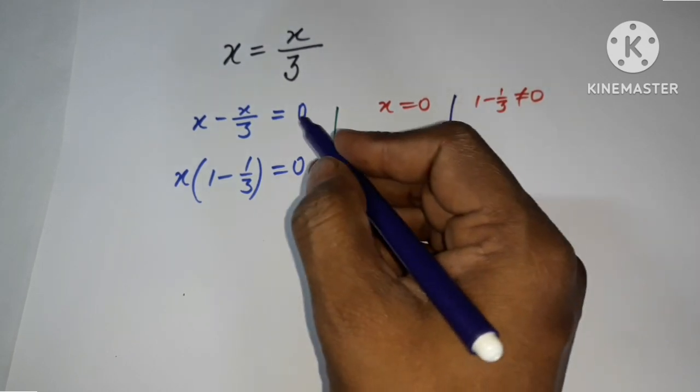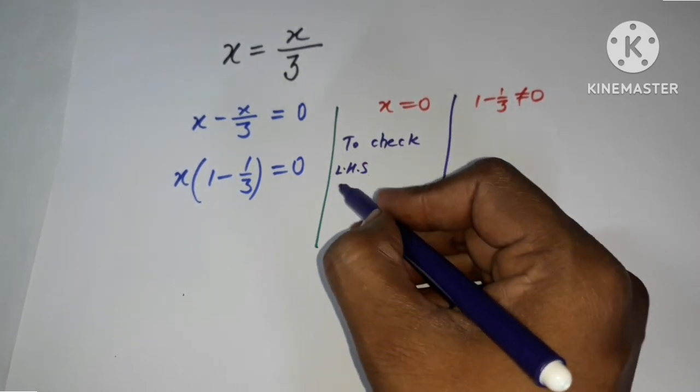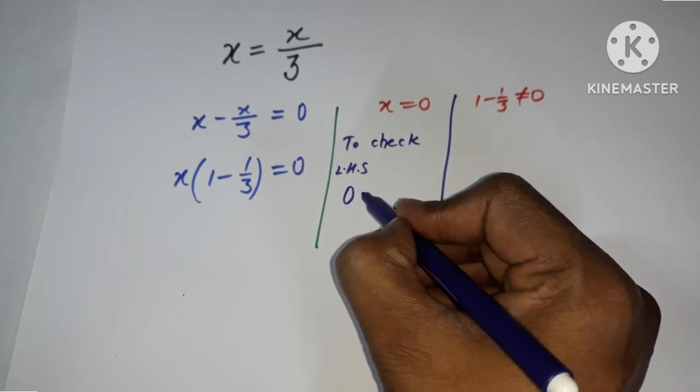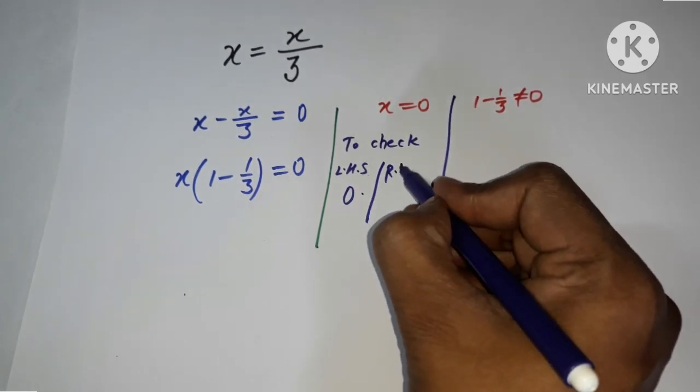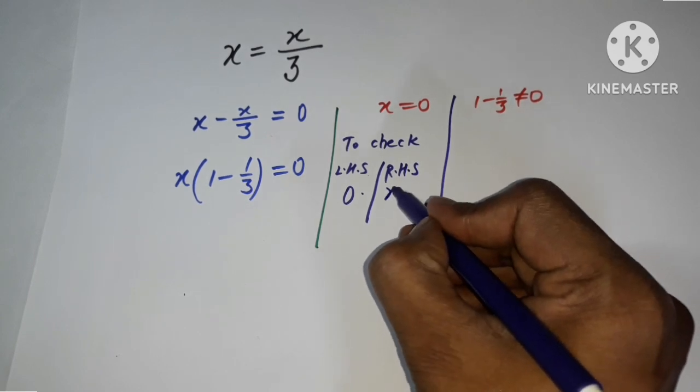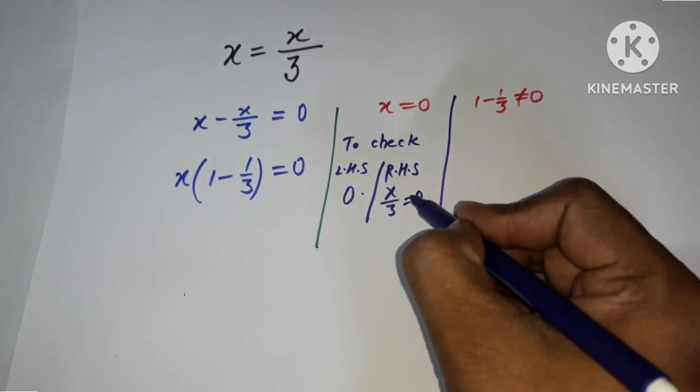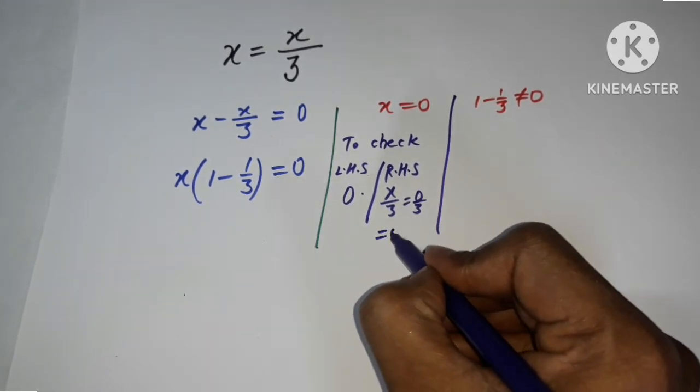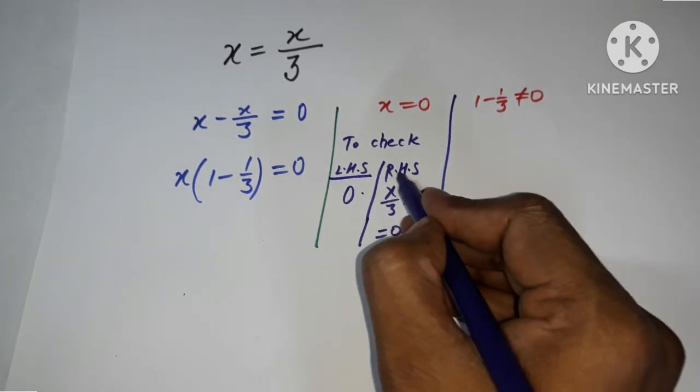On the LHS we have x equals 0, and on the RHS we have x upon 3, which is 0 upon 3, which equals 0. So we see that LHS and RHS are equal.